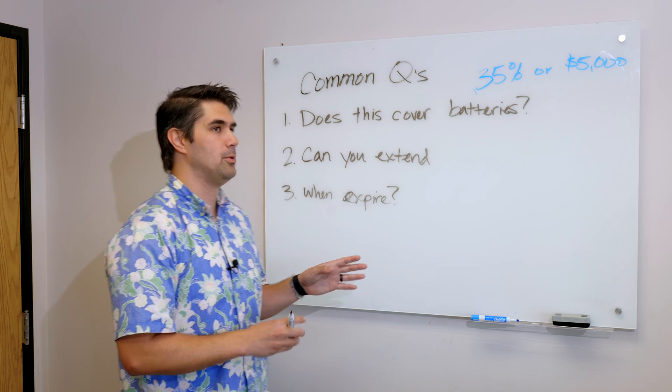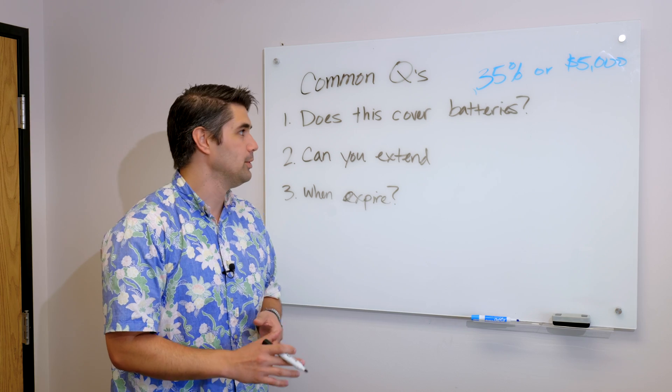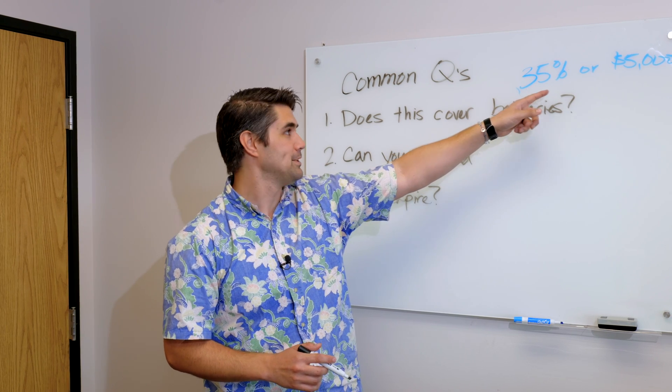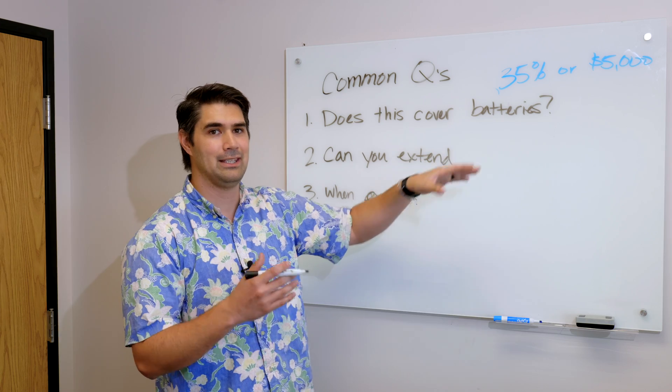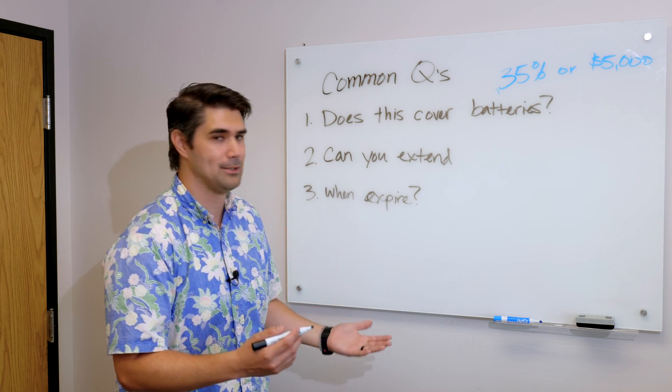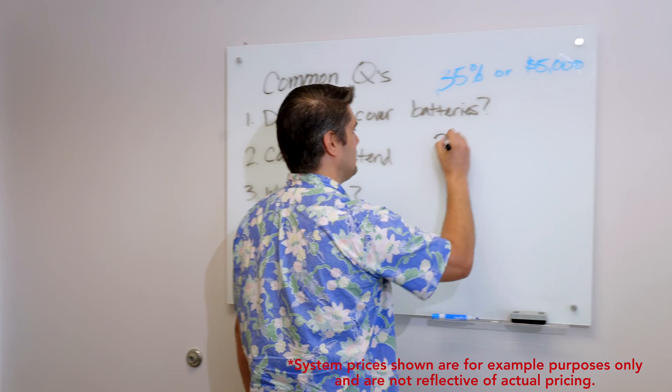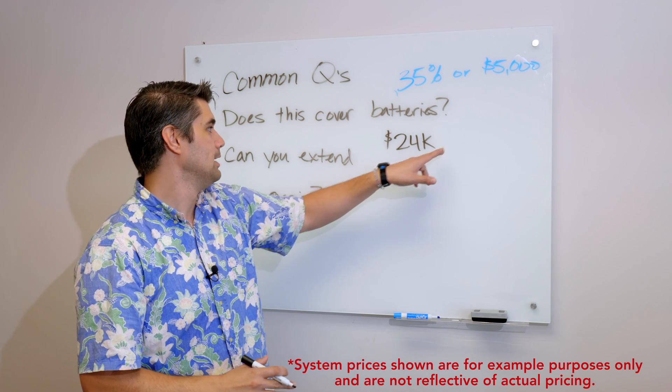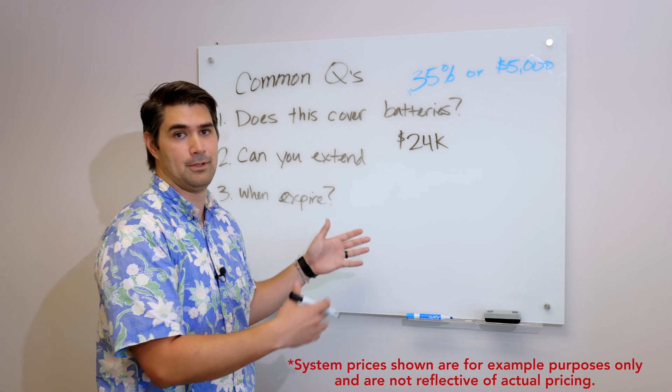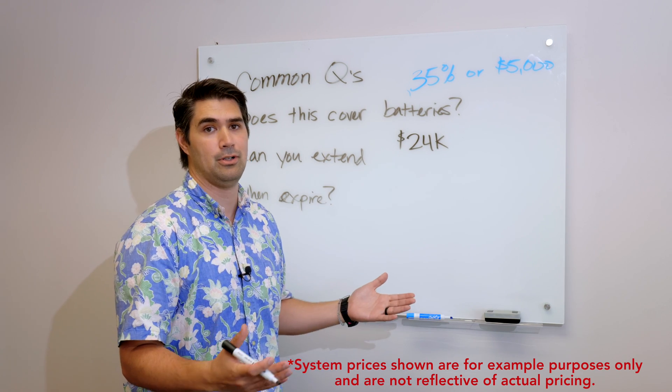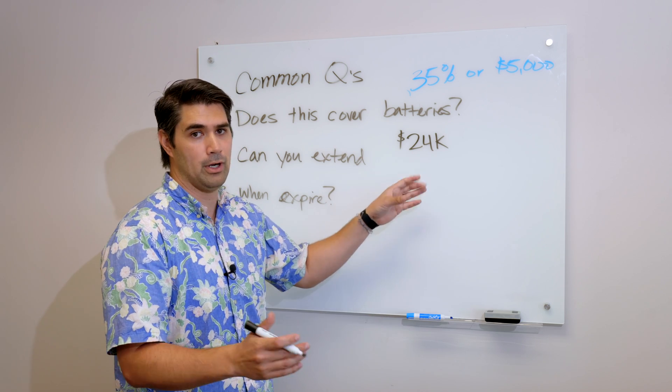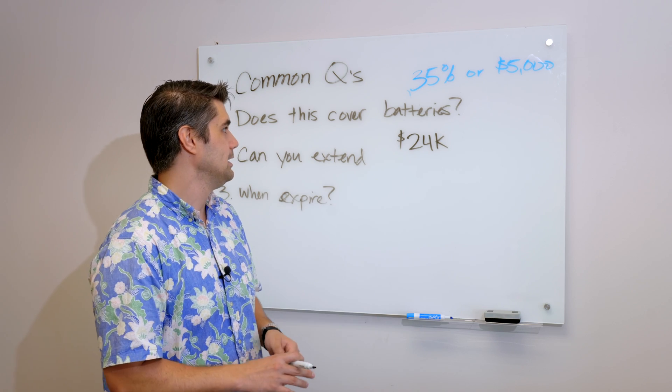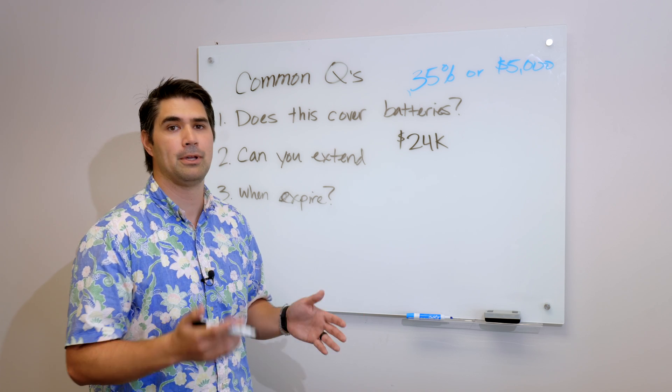So number one, does the Hawaii state tax credit include batteries? Yes and no. So it is part of the renewable energy technology, so technically it would be covered. But if you remember, because we have this 35% or $5,000 cap, it doesn't actually really give you any additional savings. So if my system is $24,000, like we did on the first example, the system was capped at five. Well, let's say we add in $10,000 for a battery. That extra $10,000, you're not seeing any additional tax credit there as far as the state is concerned. On the federal level, you are. The federal is just a blanket tax credit. It's 26% off of the entire bill. But on the state side, does it include batteries? Technically, yes. But you typically won't see much advantage from it.